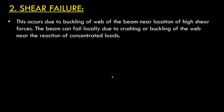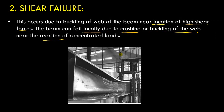The second failure mode is shear failure. This generally occurs due to buckling of the web of the beam near locations of high shear force. The beam can fail locally due to crushing or buckling of the web near the reaction of a concentrated load. As illustrated in this figure, a concentrated point load creates high shear forces in that region, causing the web to locally buckle — resulting in shear failure.